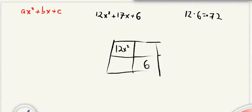And so now, like we've been doing before with the factoring, what we want to find is we want to find two factors of 72 that are going to add up to 17.